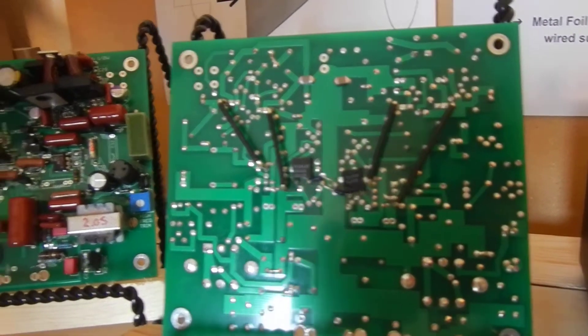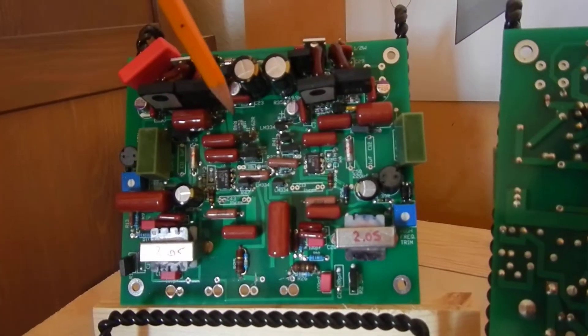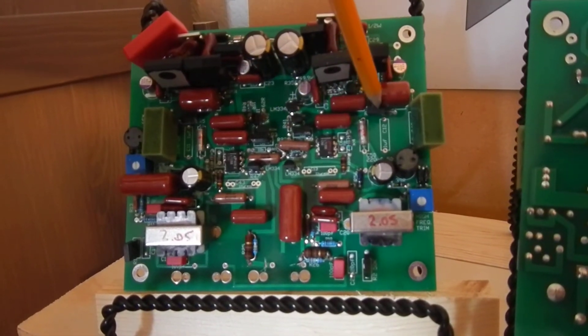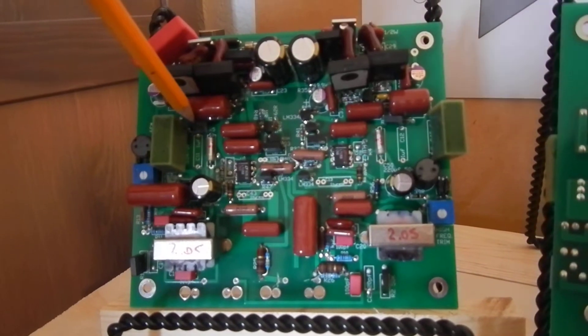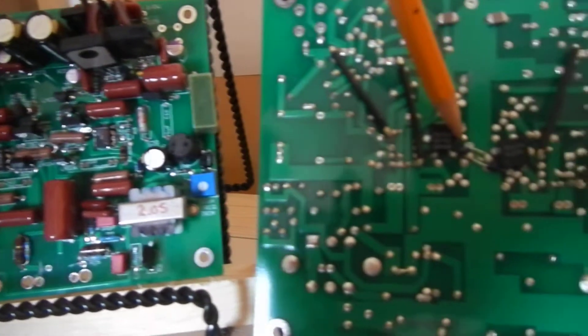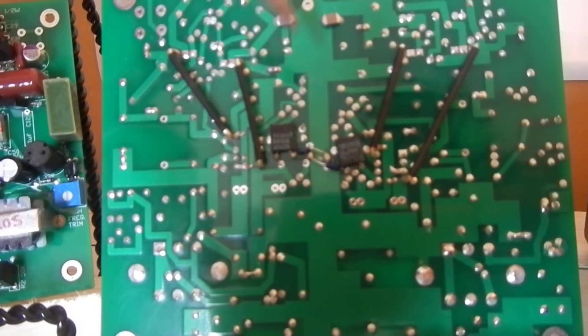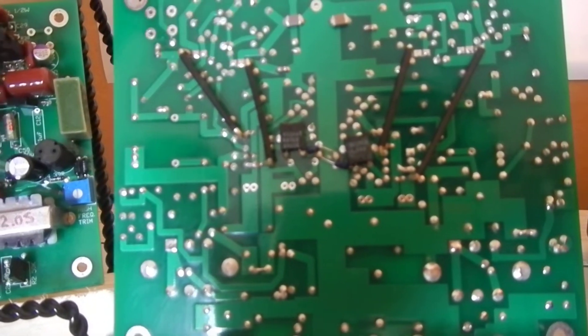For the audio section, we use bulk foil resistors here, here, here, and here, and also on the bottom of the board here and here. These are about the best resistors that money can buy.